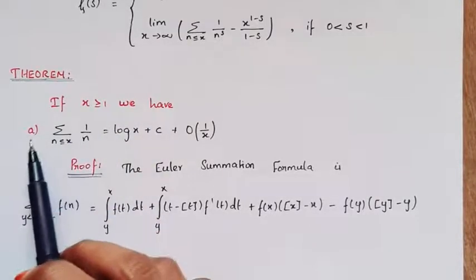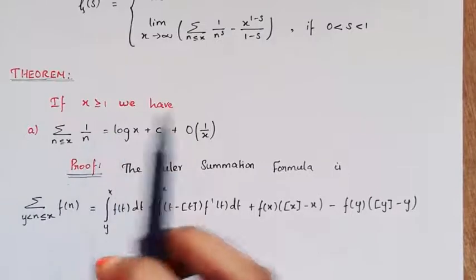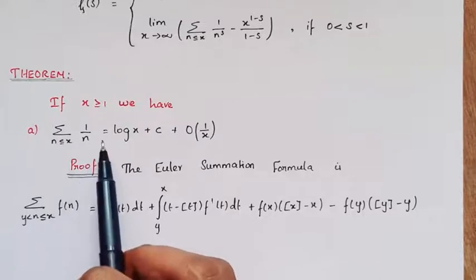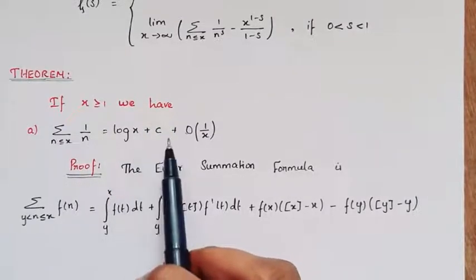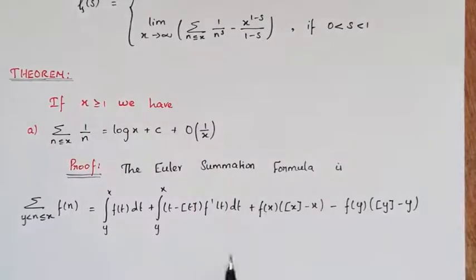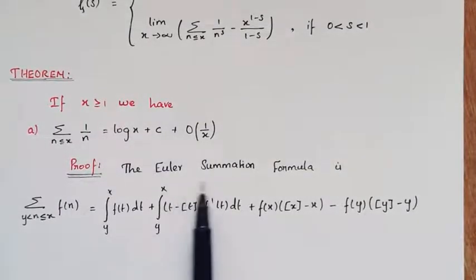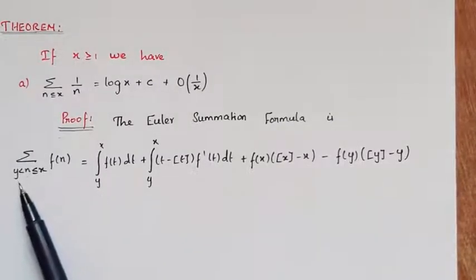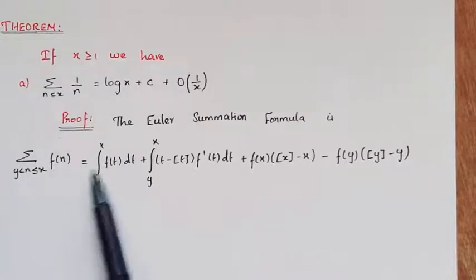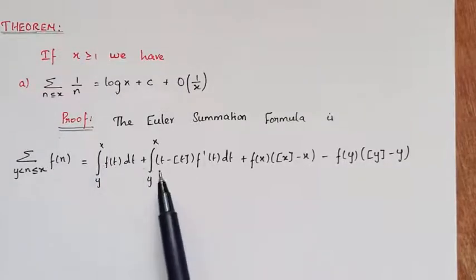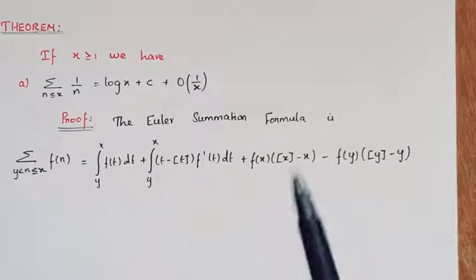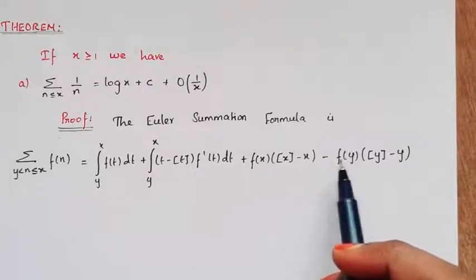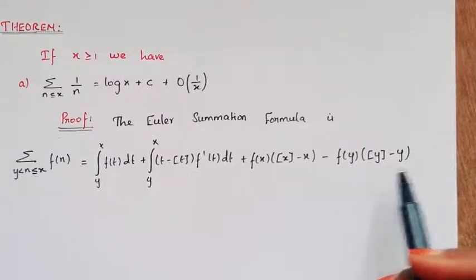The first subdivision: if x is greater than or equal to 1, we have the sum over n less than or equal to x of 1 by n, equal to log x plus C plus big O of 1 by x. We prove this theorem by using the Euler summation formula. The Euler summation formula is: sum over y less than n less than or equal to x of f(n) equals the integral from y to x of f(t) dt, plus the integral from y to x of (t minus floor(t)) times f'(t) dt, plus f(x) times (floor(x) minus x) minus f(y) times (floor(y) minus y).